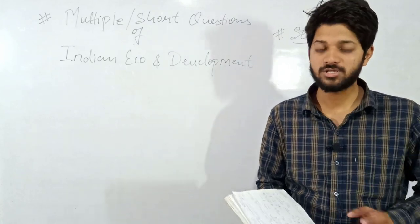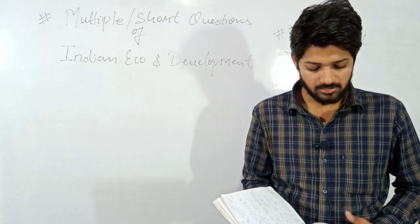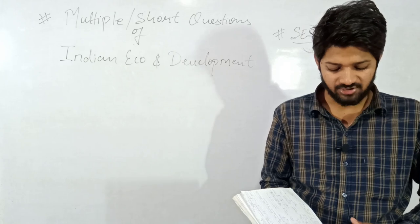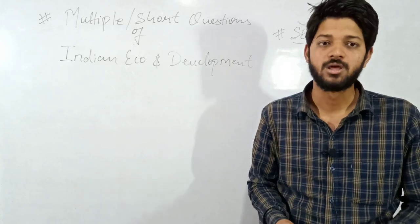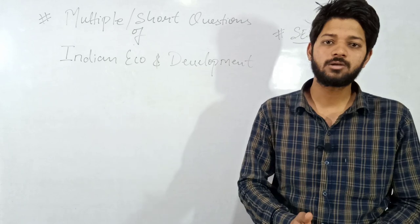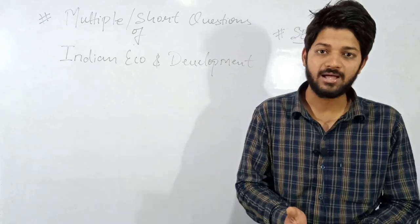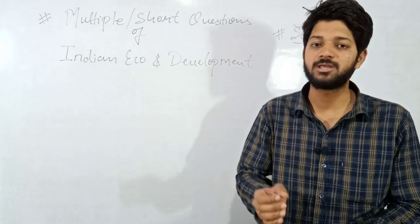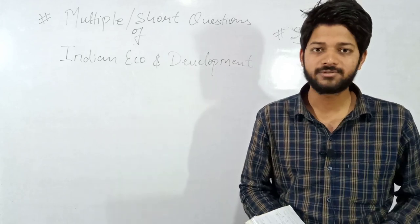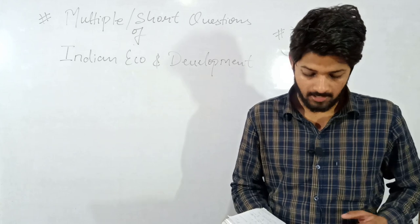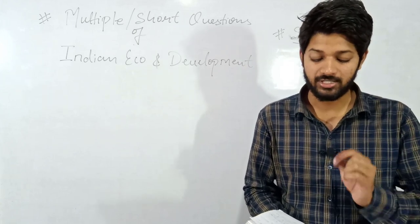Question number twenty-four: here is a quotation — by whom was it given? Listen: 'Real progress of India did not simply mean the growth and expansion of industrial urban centers but mainly the development of villages.' This means real growth is not only in industrialization and the urban sector but also in the countryside and rural areas. This definition was given by the father of the nation, Mahatma Gandhi.